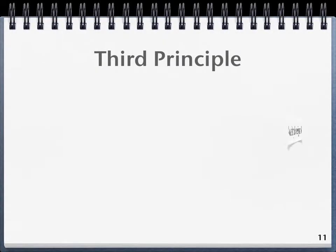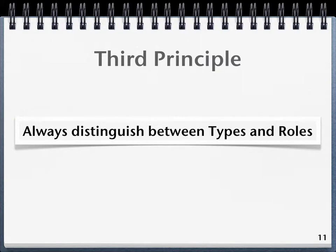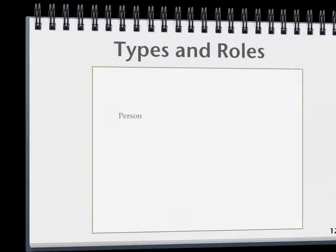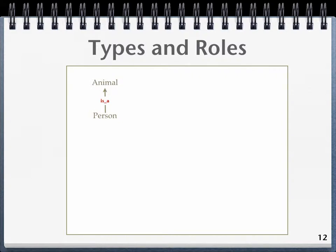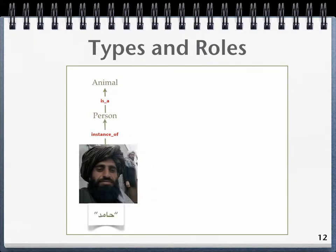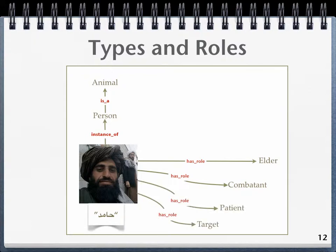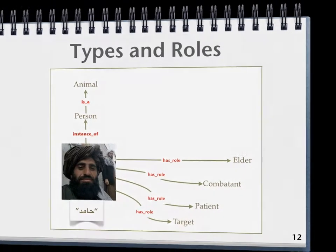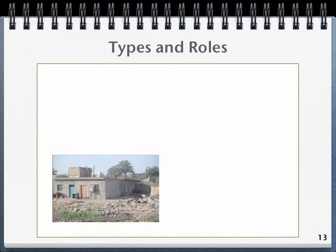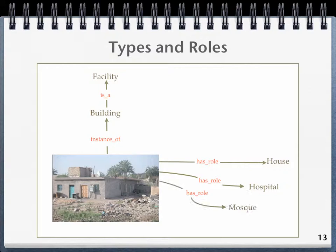Third principle: always distinguish between types and roles. For example, a person is a type of animal. Hamid, pictured here, is an instance of a person who can be in various roles, such as an elder, combatant, patient, or even a target, to name just a few. Likewise, a building is a type of facility which can be in various roles, such as a house, hospital, a mosque, or even a target.